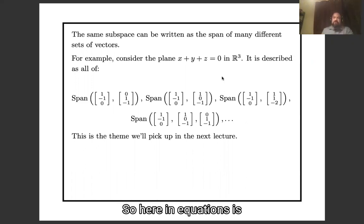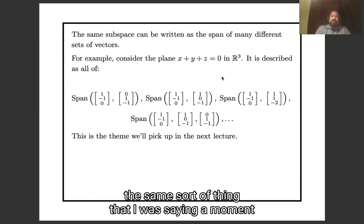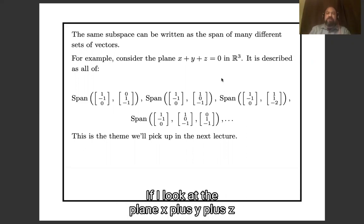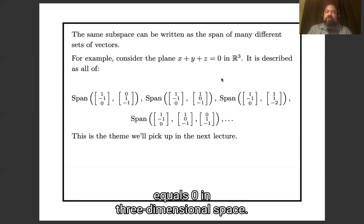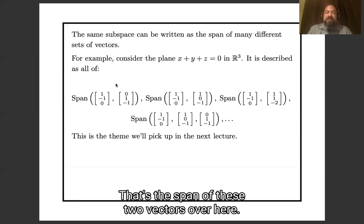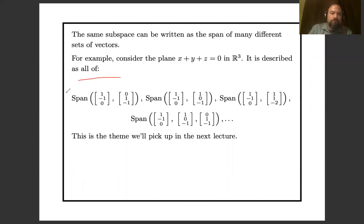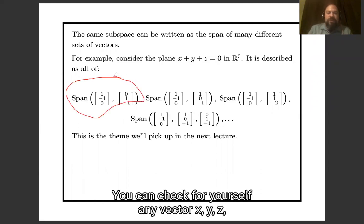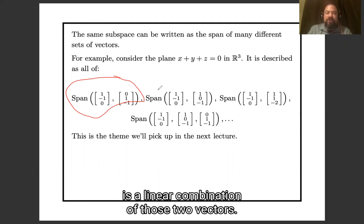So here in equations is the same sort of thing that I was saying a moment ago with physical props. If I look at the plane x plus y plus z equals zero in three-dimensional space, that's the span of these two vectors over here. You can check for yourself. Any vector x, y, z where x plus y plus z equals zero is a linear combination of those two vectors.